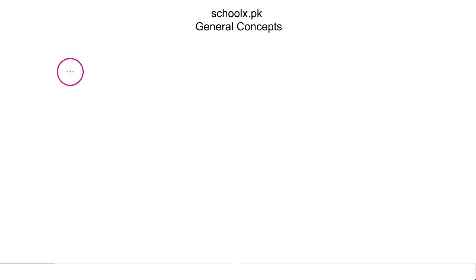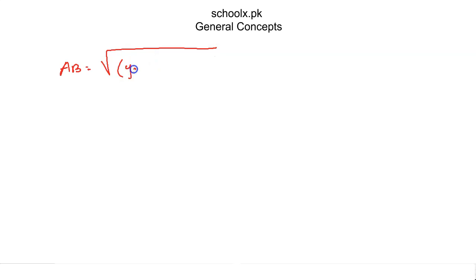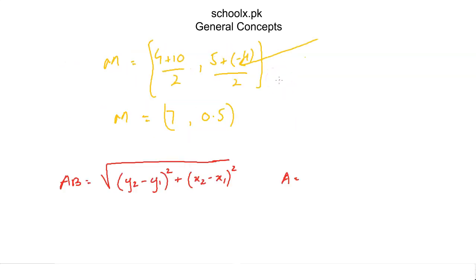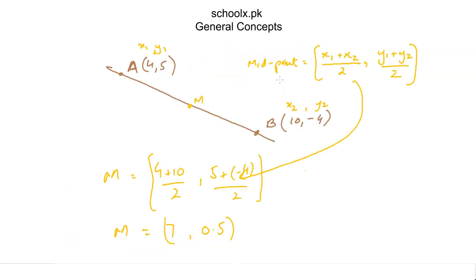Now for finding the distance between points A and B, we use this formula, which is used to find the distance between any two points on a line. The formula is the square root of (y2 minus y1) squared plus (x2 minus x1) squared.